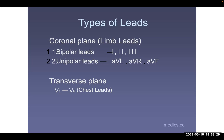aVL is usually on the left upper limb, aVR on the right upper limb, and aVF on the left foot. When connecting patients to the 12-lead ECG, leads are color-coded: red is on the right arm, yellow on the left arm, green on the left foot, and black — which is neutral — on the right foot. I encourage all of you to go to the ward, get an ECG tracing, and look at the color coding and what they mean, and where V1, V2, V3 are placed.